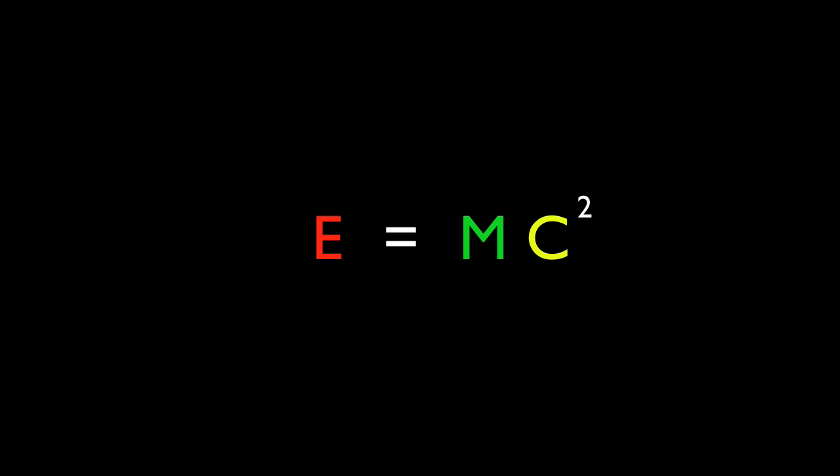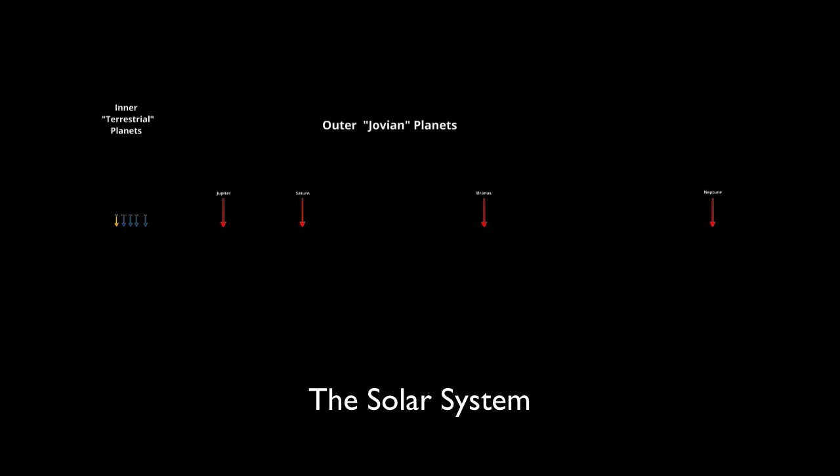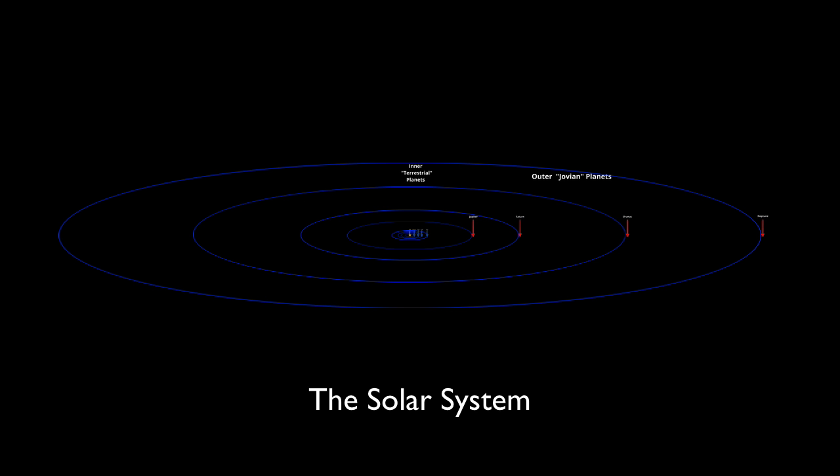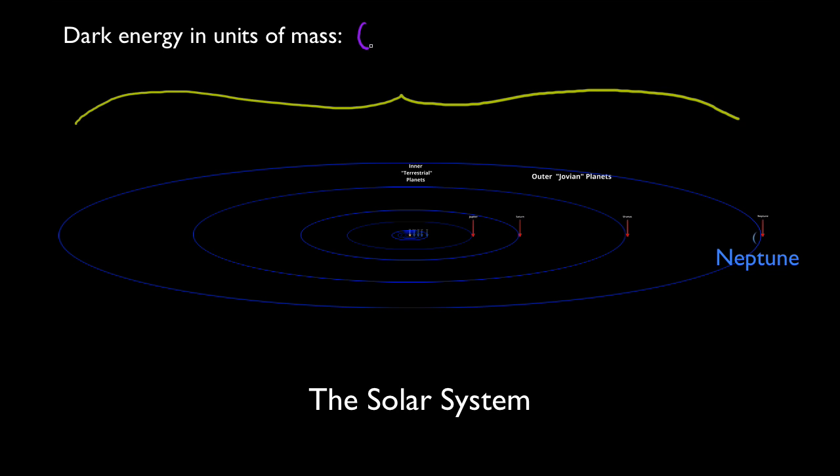So how much dark energy might there be within our solar system in units of mass? Cosmologists estimate that if you took all the space within the orbit of Neptune, that would correspond to about six tons of dark energy. Six tons spread over the whole solar system isn't much.